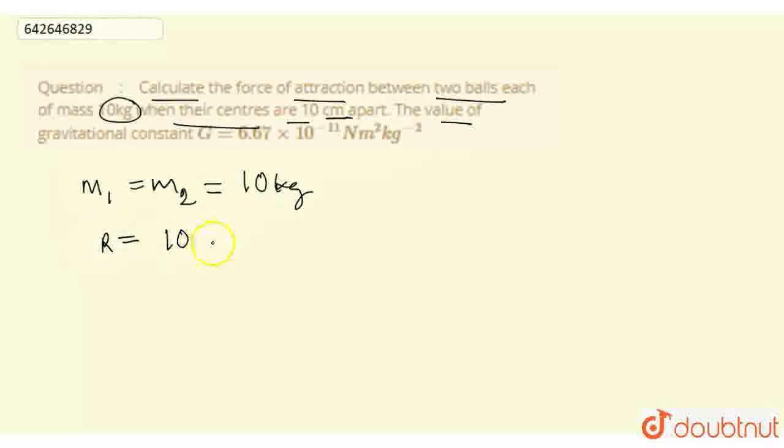If we convert it into 10 cm, then it will be 10 × 10^-2 meter. And the value of G is given: 6.67 × 10^-11 newton meter.